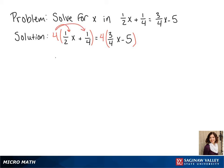4 times one-half x gives us 2x, plus 4 times one-fourth is 1. And 4 times three-fourths x gives us 3x, minus 4 times 5 is 20.